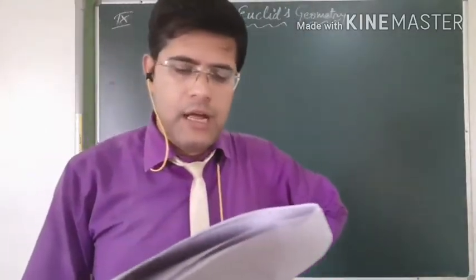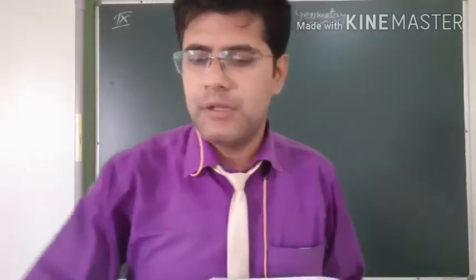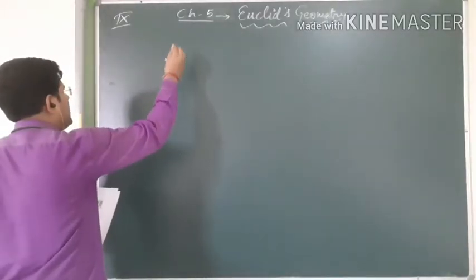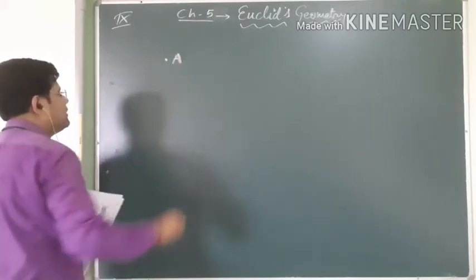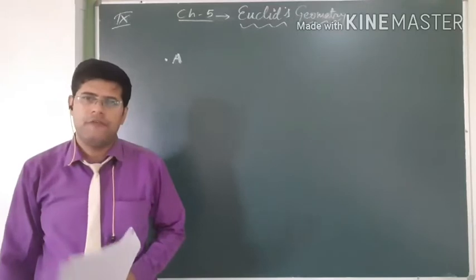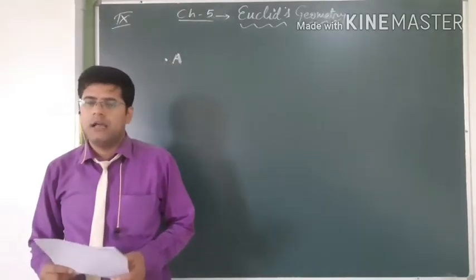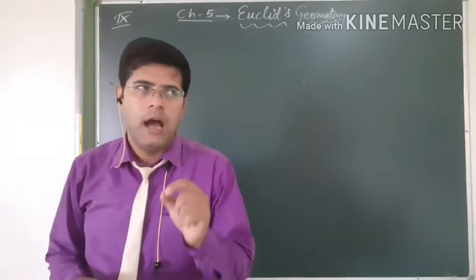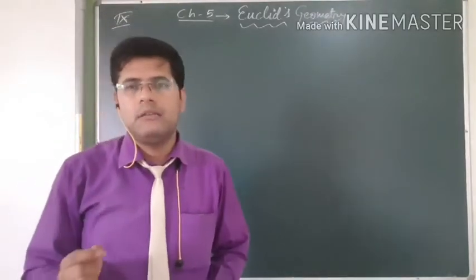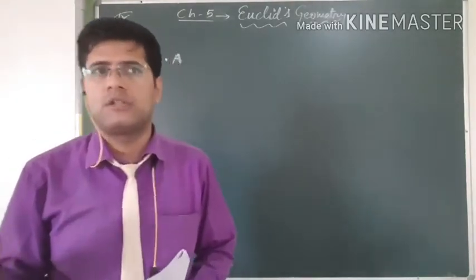A few definitions are mentioned in class 9th. The first one: a point is that which has no part. A point is a tip of a pencil, referred by a capital letter, and is used to show exact location. As on a map, if you are asked to mark Delhi, you put a point where Delhi is located and write Delhi. A point is a tip-like structure with no part — meaning we cannot split a point.